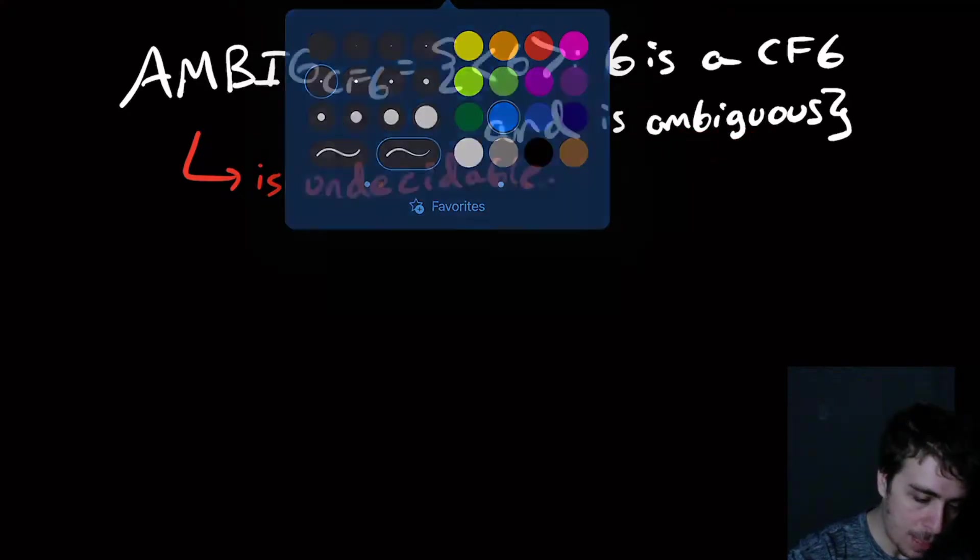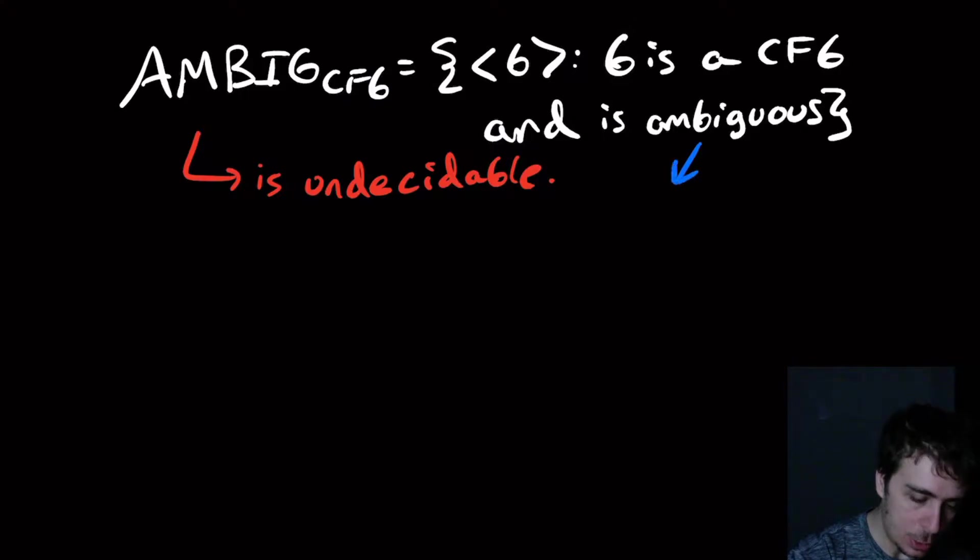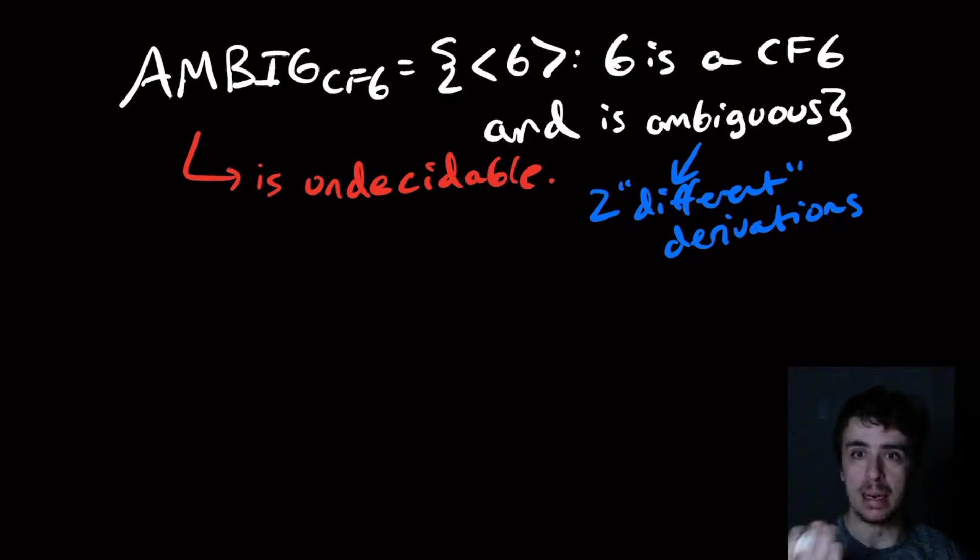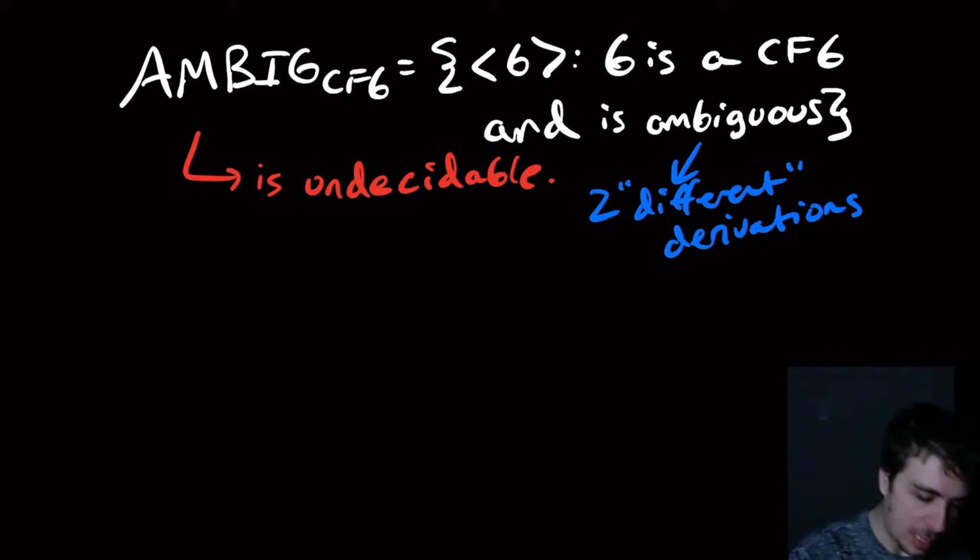Remember, ambiguous means two different, in some sense different, derivations. By different here we mean—there are many definitions—but leftmost derivations is one of them. So two different leftmost derivations.